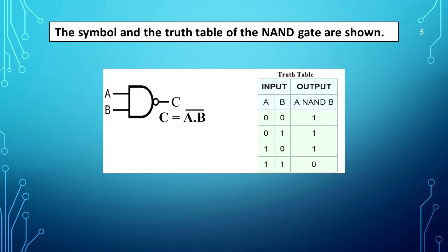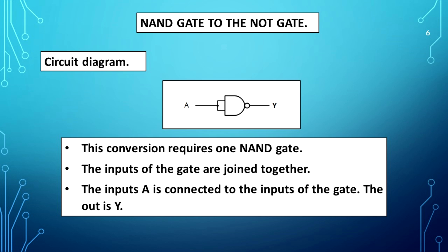The symbol and the truth table of the NAND gate are shown. The NAND gate to NOT gate circuit diagram is shown. This conversion requires one NAND gate. The inputs of the gate are joined together, and input A is connected to the inputs of the gate. The output is Y.